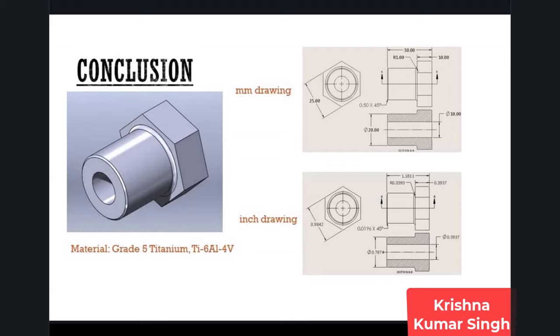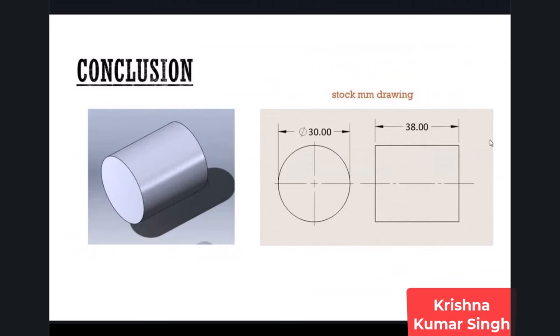We will discuss manufacturing methods and tools for a sample part. You can see the part drawings in mm or inches. The material is titanium grade 5, or Ti-6Al-4V. Cutting tools and cutting data selection depends on the material you want to machine. We will try to machine this part with titanium cylindrical stock.